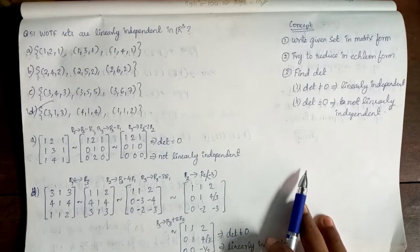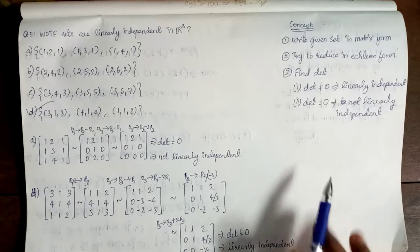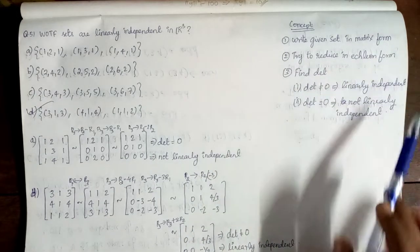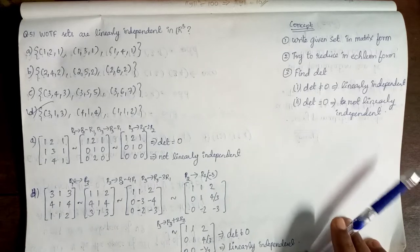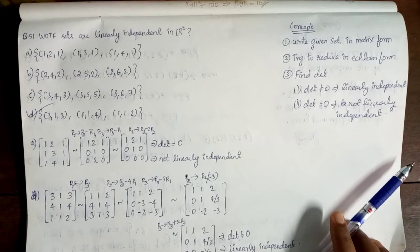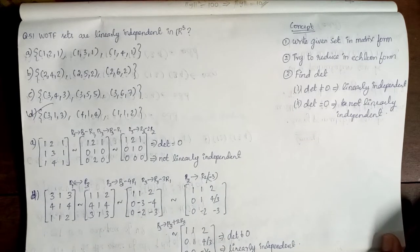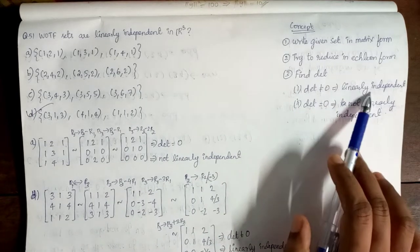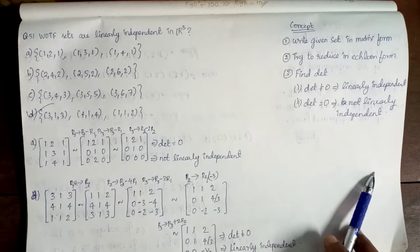So we use the concept. First of all, the given set will be written as a matrix. Now we will reduce to equivalent form. If the determinant is non-zero, the set is linearly independent. Determinant is non-zero means linearly independent.